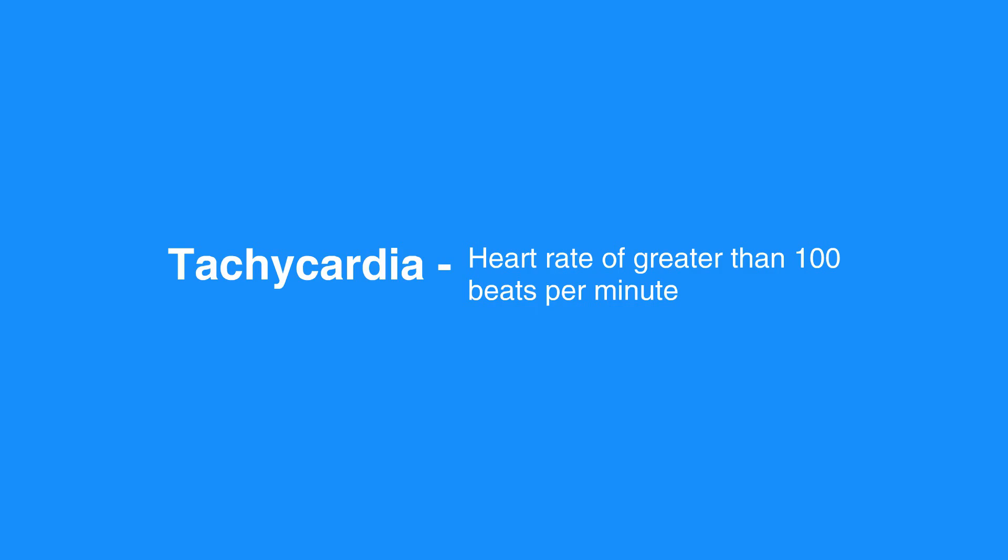When the heart beats too quickly, there is a shortened relaxation phase. This causes two main problems. The ventricles are unable to fill completely, causing cardiac output to decrease, and the coronary arteries receive less blood, causing supply to the heart to decrease.